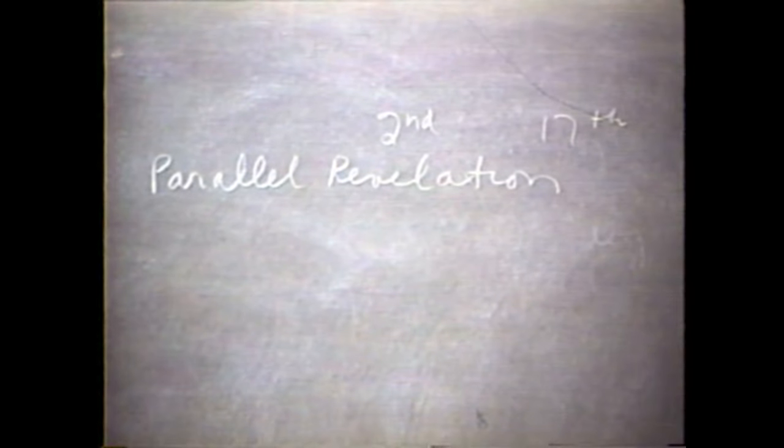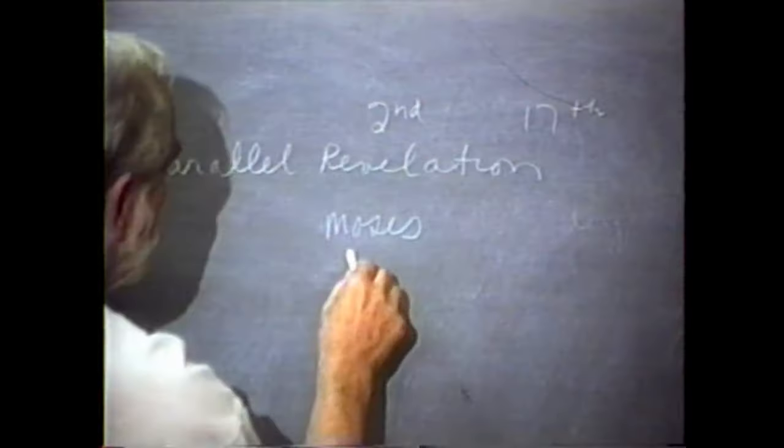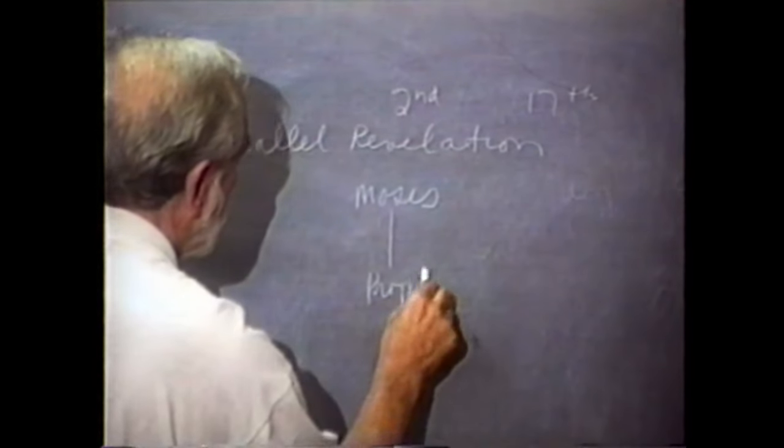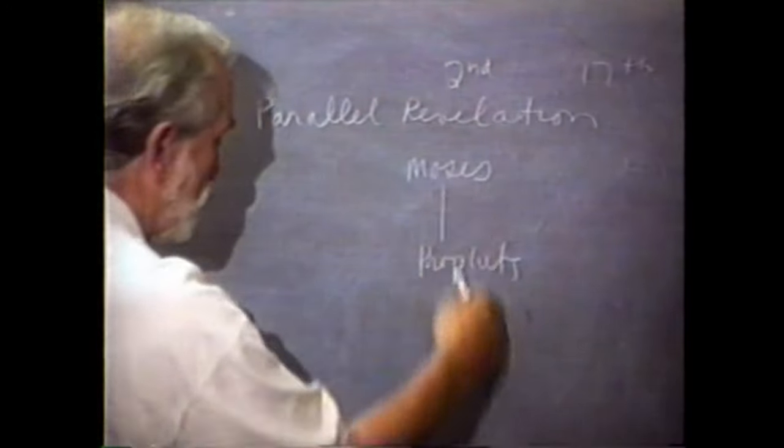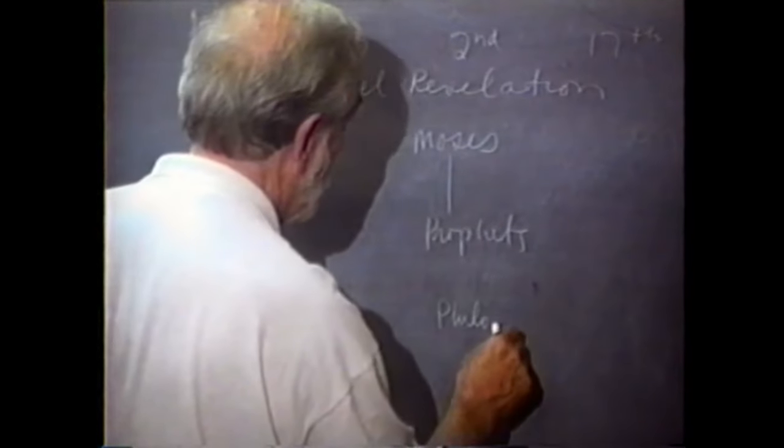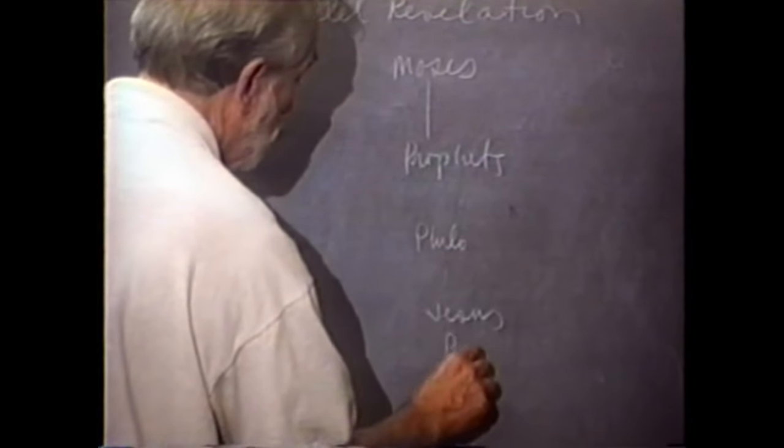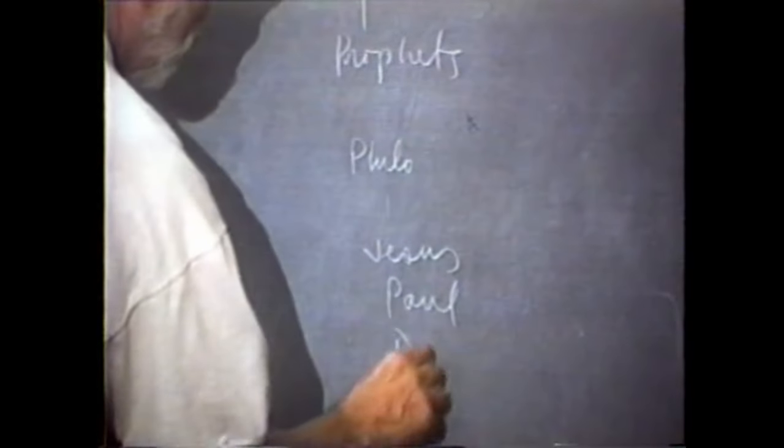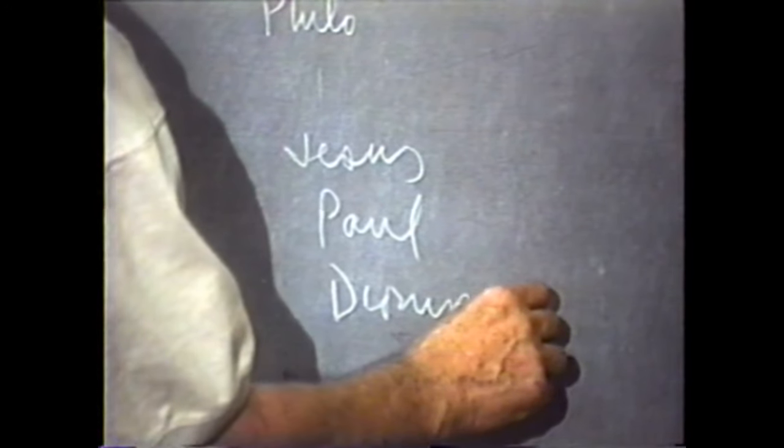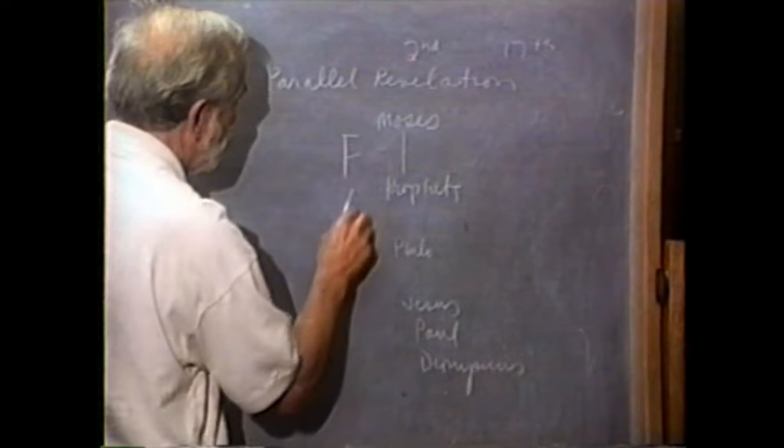It's called parallel revelation. As you all know, the great game started with Moses. And following him were the prophets all the way down. You can put in some great figures, including Philo the Jew or Philo of Alexandria. Then Jesus, Paul, his companion was Dionysius, and there was Origen and Tertullian, and the list goes on. This is revelation based upon faith, belief.